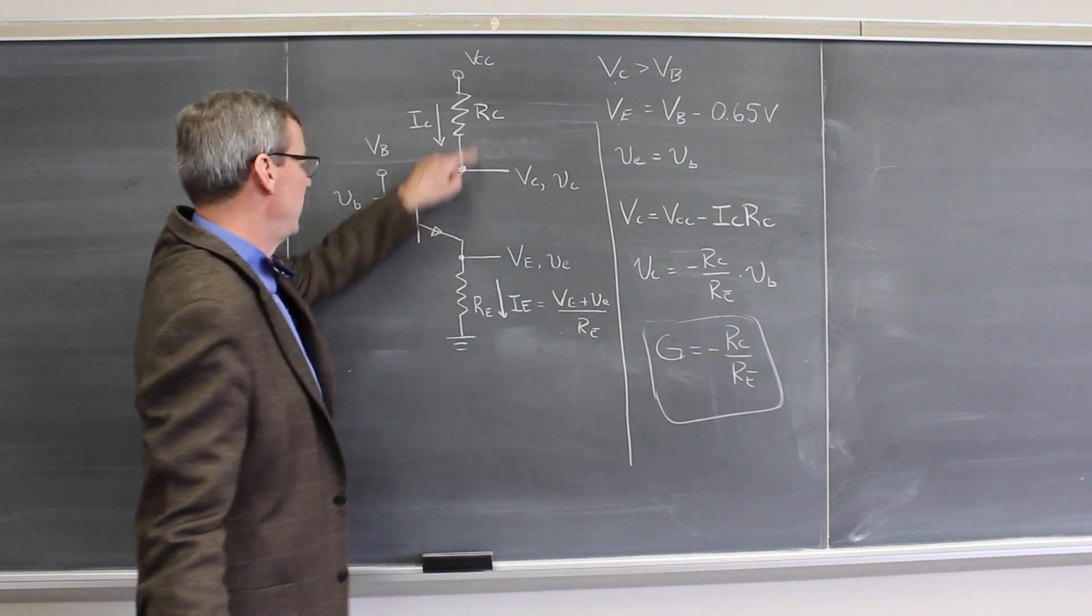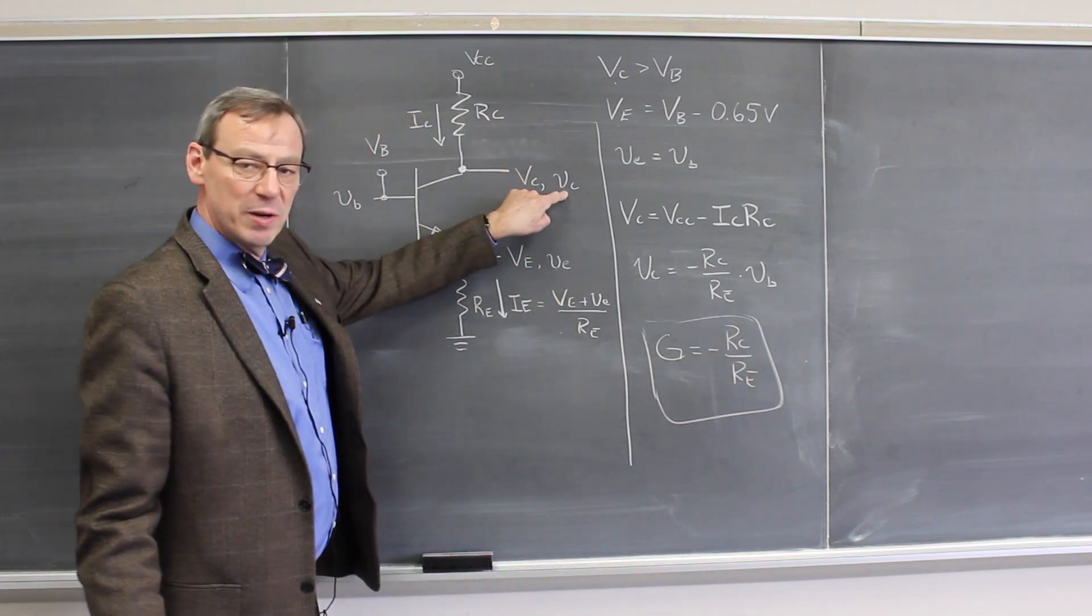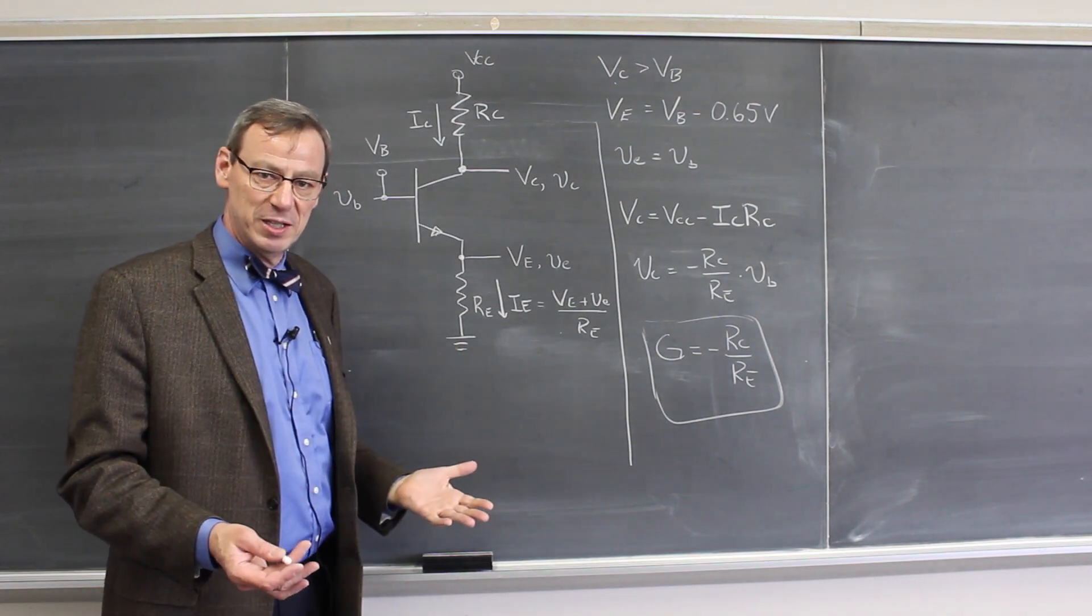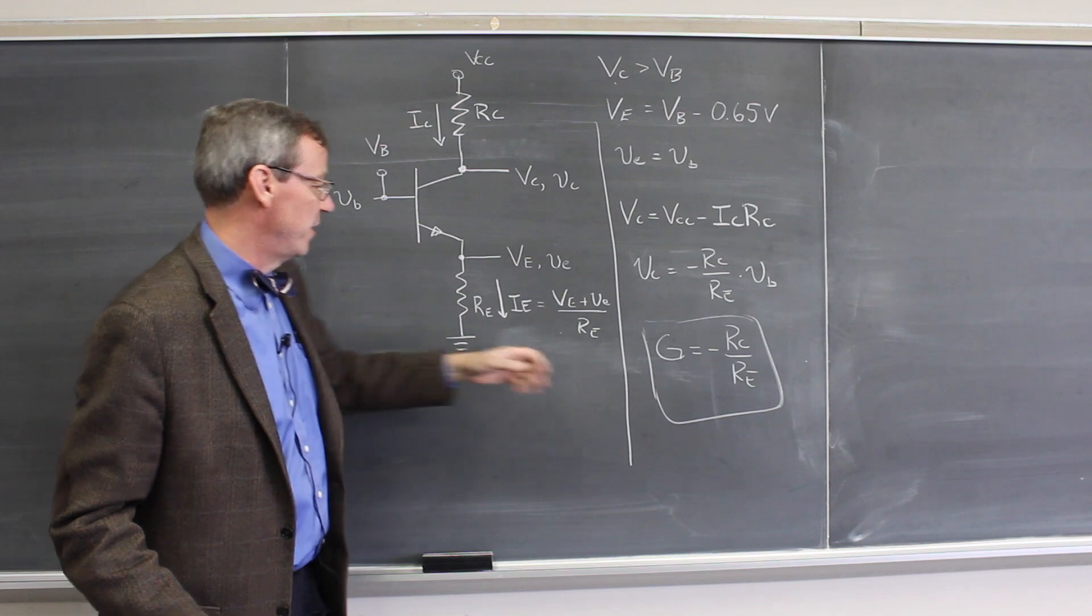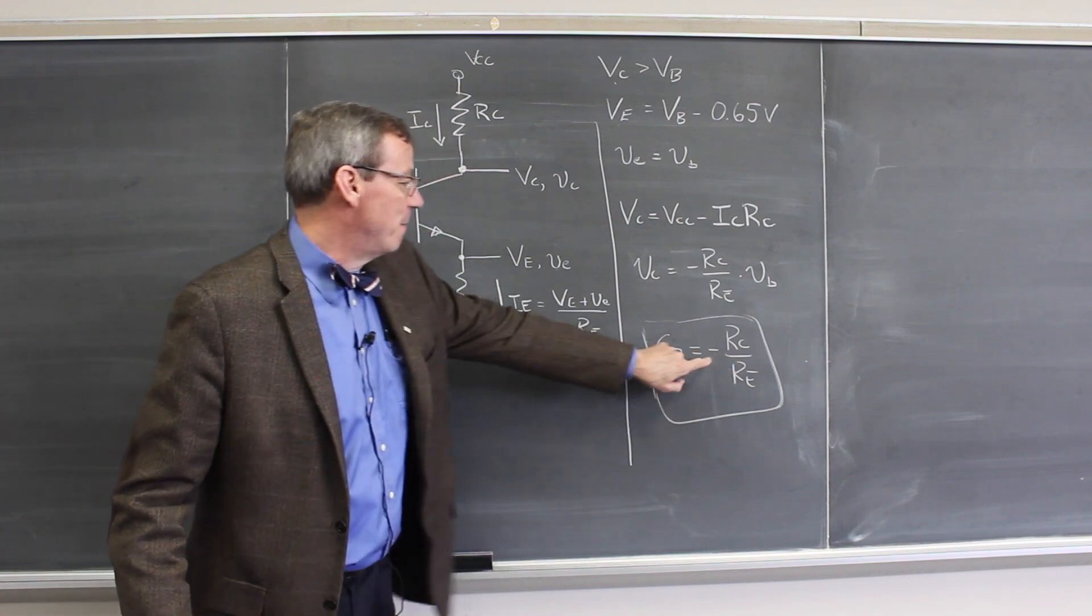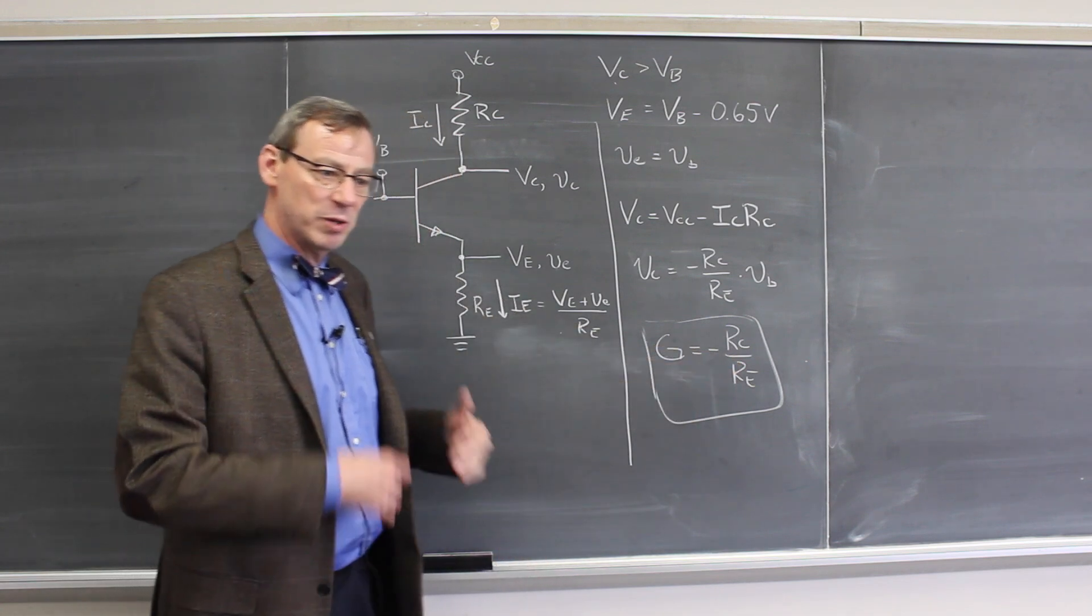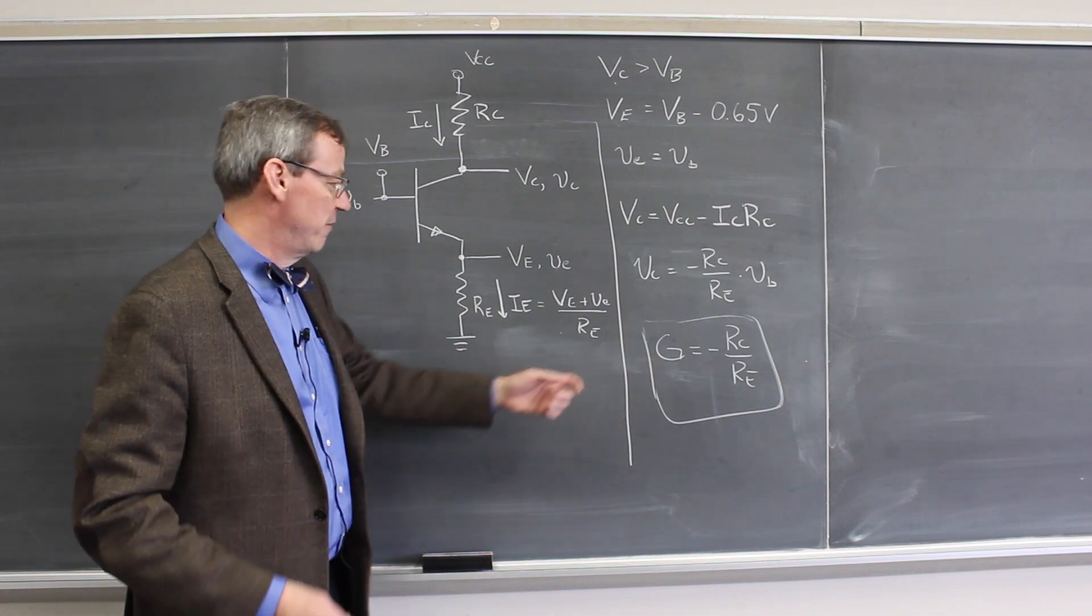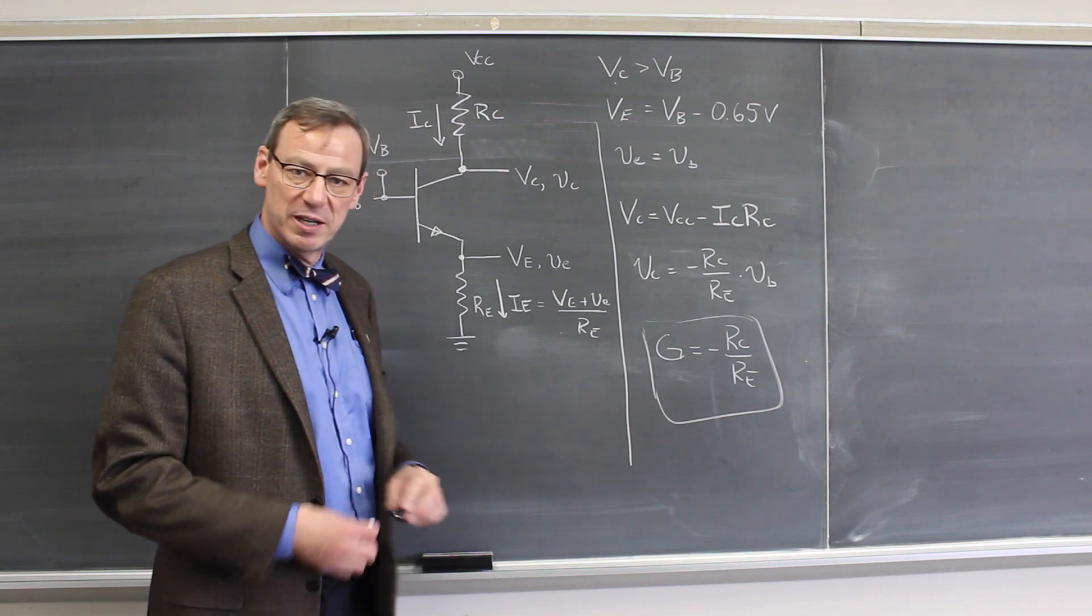So if we choose RC to be bigger than RE, the output AC signal will be bigger than the input AC signal. We get an amplification. So if we chose this 10 times bigger than this, we'd have an amplification of 10. Again, the minus sign just tells us that the trig function on the output is inverted from the trig function on the input. If we have a plus sign going in, we have a minus sign wave coming out.